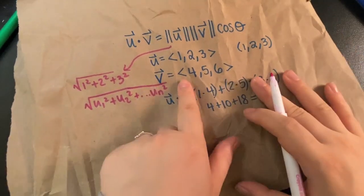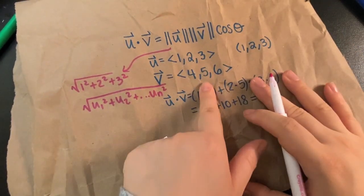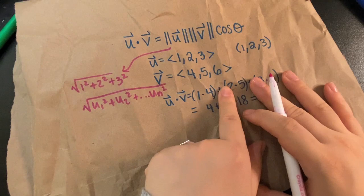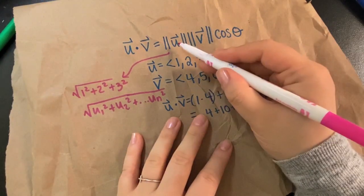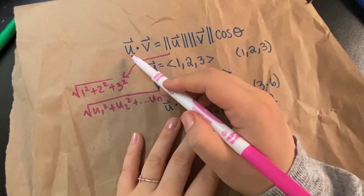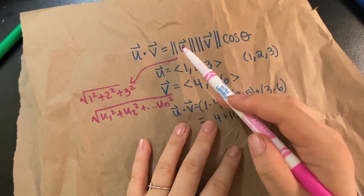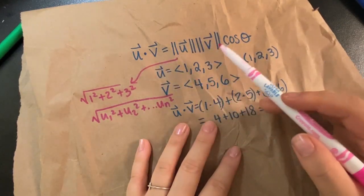And so same thing for V. So the square root of 16 plus 25 plus 36 in this case. So this is going to be a number, this is going to be a number, this is going to be a number.